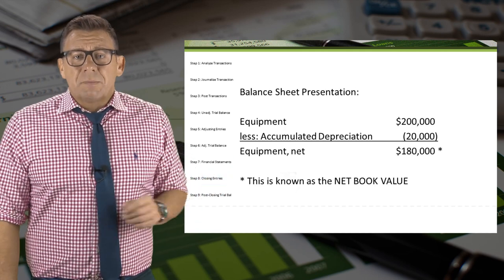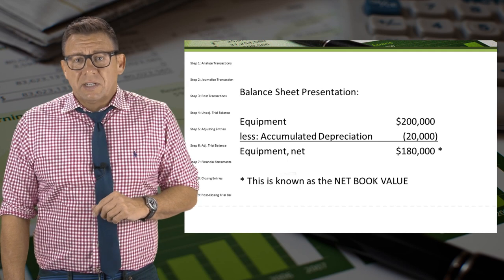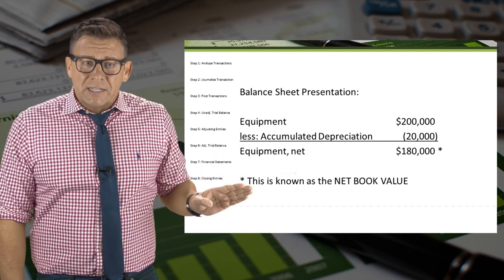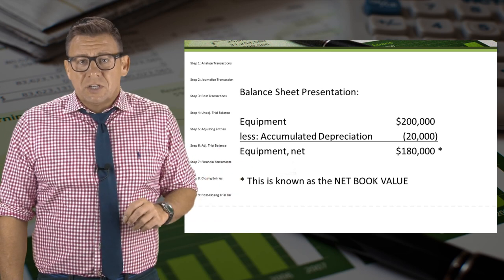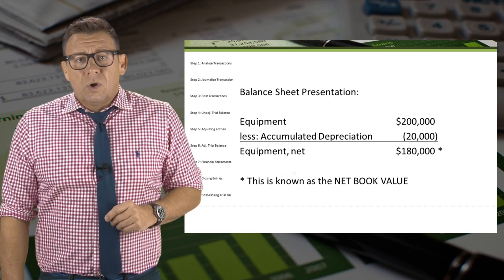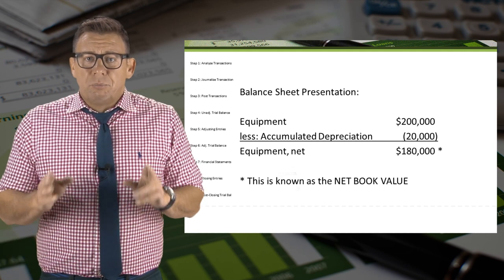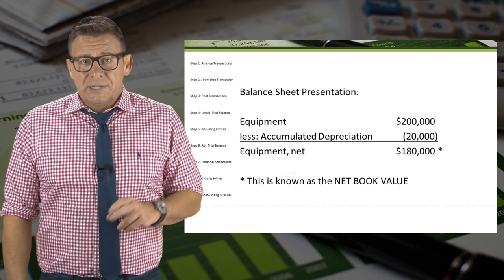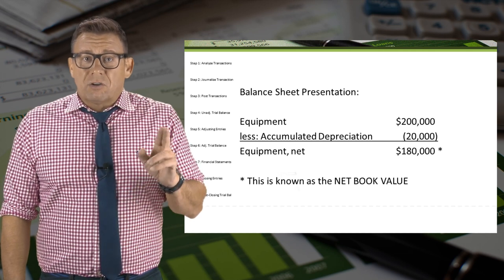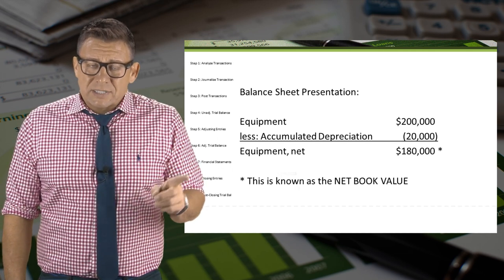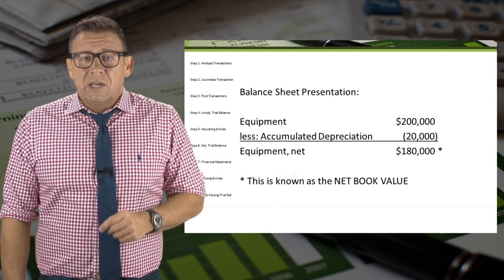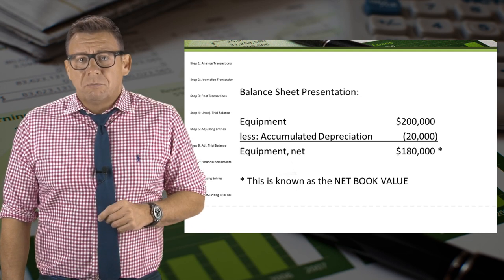Finally, let's look at the balance sheet presentation for equipment. Notice that accumulated depreciation is deducted from the equipment cost to arrive at a net amount. We call that net book value. The calculation is: cost minus accumulated depreciation equals net book value.